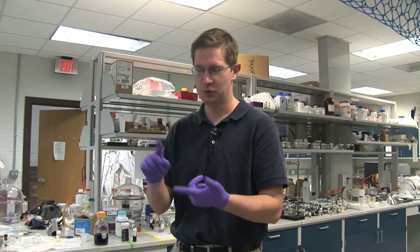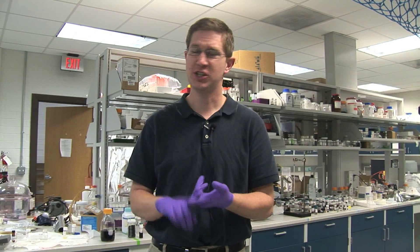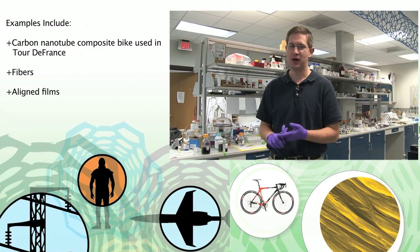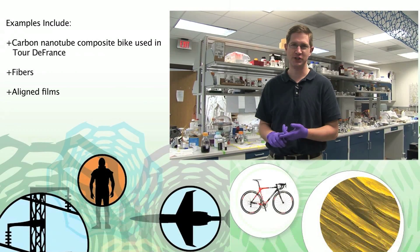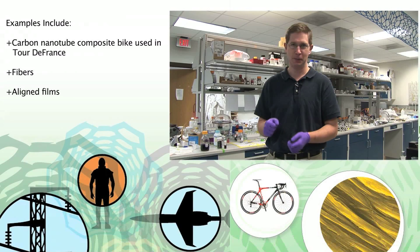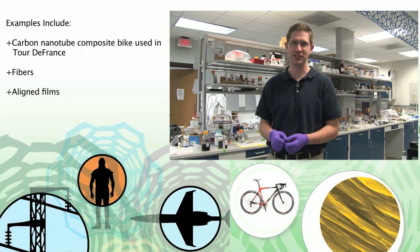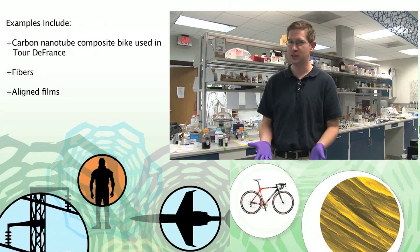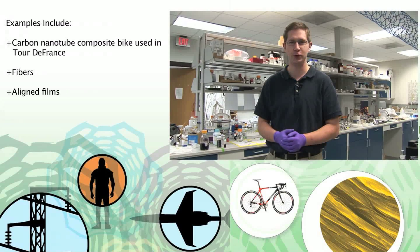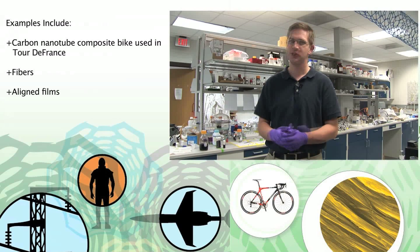We focus on fibers, aligned films, and composites. One of the most well-known composite examples with nanotubes was in the Tour de France last year. One of the bikes was a carbon nanotube polymer composite that was exceptionally strong while still being lightweight, which is exactly what you would want for a bike in the Tour de France.